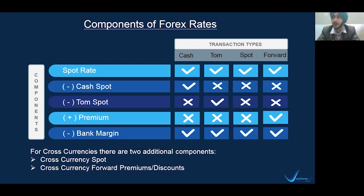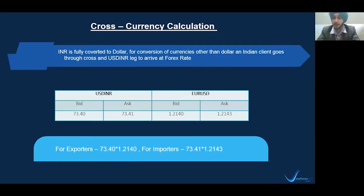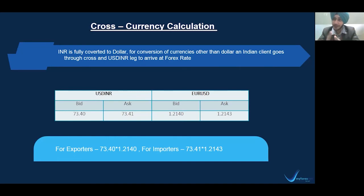There may be additional components if a client is dealing in cross currencies. INR is fully converted to dollars, so for conversion of currencies other than dollars, an Indian client has to go through the USD/INR leg and the cross-currency leg. For example, if an Indian importer needs to make a payment to a German supplier, he will check the ask side of the USD/INR leg and the ask side of the Euro/USD leg. After multiplication, he will get the spot rate. For an exporter, he or she just needs to check the bid side of both legs.